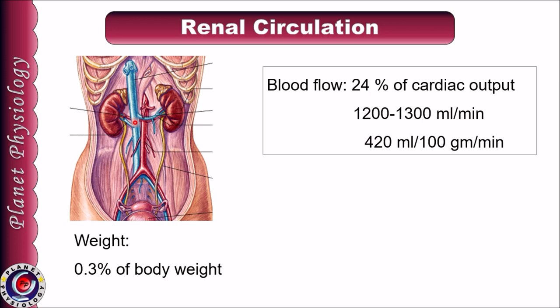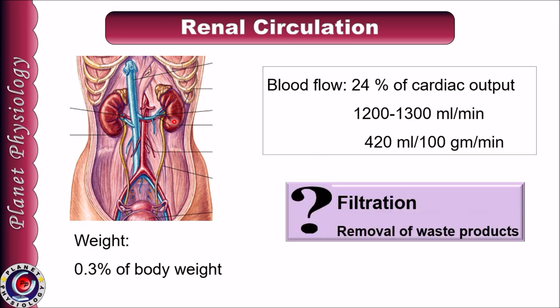Normally we have a pair of kidneys which are located retroperitoneally and they constitute just 3% of our body weight, but they receive 24% of the cardiac output. That is, blood flow to the kidneys is about 1200 to 1300 ml per minute, or 420 ml per 100 g of tissue per minute. Kidneys are concerned with removal of metabolic waste products, achieved mainly by filtration of blood, and hence require higher blood flow.